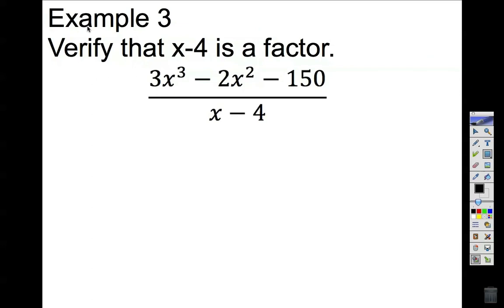Our last example: I am asking you to verify that x minus 4 is a factor. We are still going to use division. When we use division to determine if x minus 4 is a factor, all we need to do is look at the remainder. If the remainder is 0, then yes, x minus 4 is a factor of 3x cubed minus 2x squared minus 150. If the remainder is not 0, then x minus 4 is not a factor. Since this is 1 and degree is 1, I can use synthetic division.